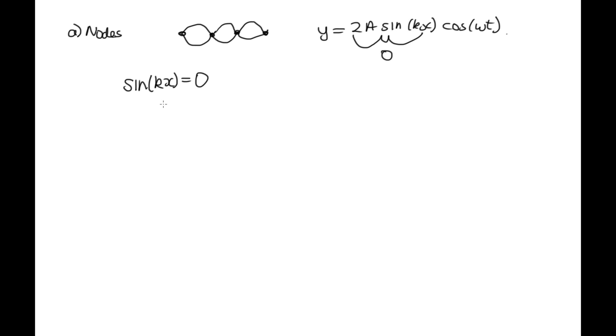And so this will occur when kx is equal to zero, or it can be equal to 180 degrees or π radians, then 360 degrees or 2π radians, 3π radians, 4π radians, et cetera. And k, that's got the same meaning it always has in this topic. It's the wave number. So it's 2π over λ.